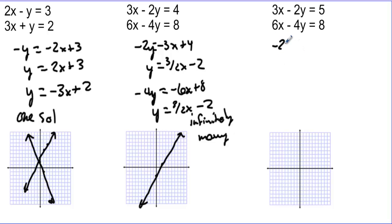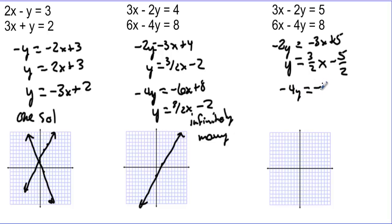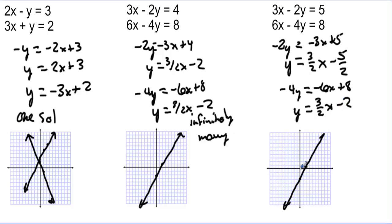For the third case, negative 2y equals negative 3x plus 5 gives y equals 3 halves x minus 5 halves. The other equation, negative 4y equals negative 6x plus 8, gives y equals 3 halves x minus 2. Both lines have a slope of 3 halves, but the y-intercepts differ: negative 2.5 versus negative 2. These are parallel lines, so there is no solution — no point of intersection.